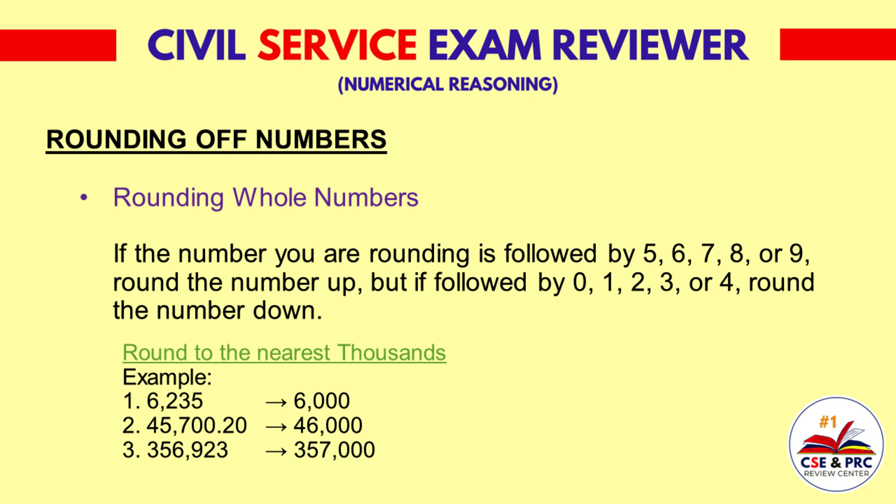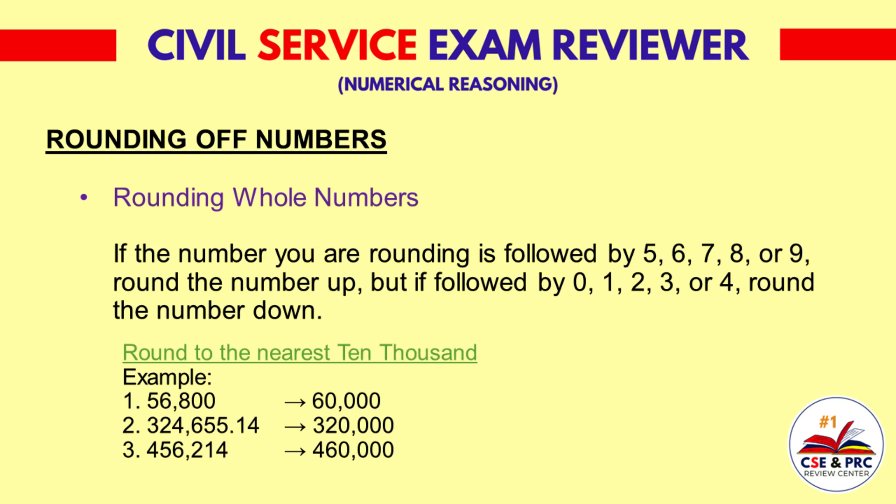Round to the nearest 10,000. Example 1: 56,800 — the result will be 60,000. Example 2: 324,655.14 — the result will be 320,000. Example 3: 456,214 — the result will be 460,000.